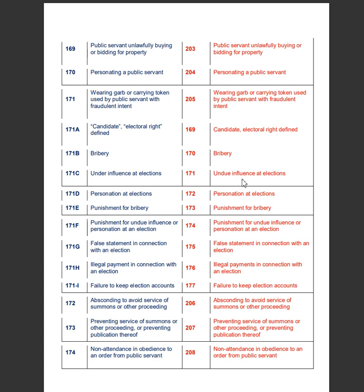Section 171D of the IPC deals with personation at elections, whereas Section 172 of the BNS deals with personation at elections. Section 171E of the IPC deals with punishment for bribery, whereas Section 173 of the BNS deals with punishment for bribery. Section 171F of the IPC deals with punishment for undue influence or personation at an election, whereas Section 174 of the BNS deals with punishment for undue influence or personation at an election. Section 171G of the IPC deals with false statement in connection with an election, whereas Section 175 of the BNS deals with the same.